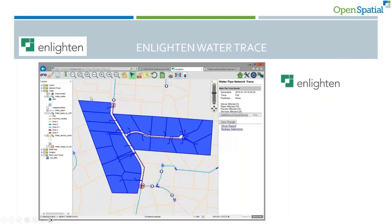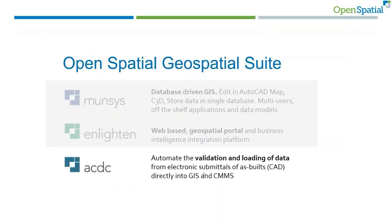Because we built network connectivity, we can do water, sewer, and fiber traces. If there's an issue on a specific pipe, we can calculate which nodes need to be isolated and which properties will be affected. On the water trace, it tells you which nodes to close to isolate the problem, and identifies the areas that are going to be affected using primary and secondary traces.